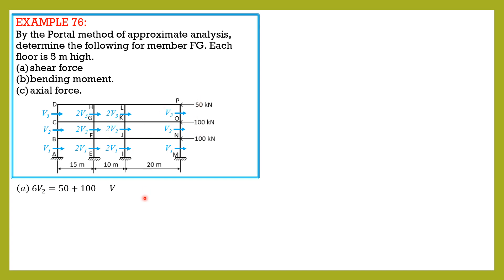Equals 50 plus 100, so v2 equals 25 kilonewtons. Therefore, the shear force in FG, which is letter A, is 2 times v2. So therefore the shear in FG is 50 kilonewtons.